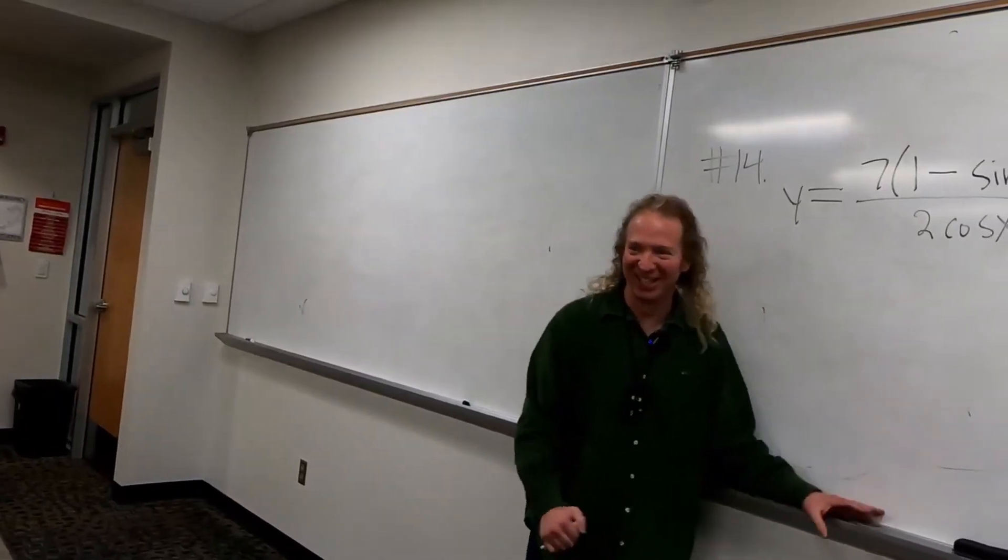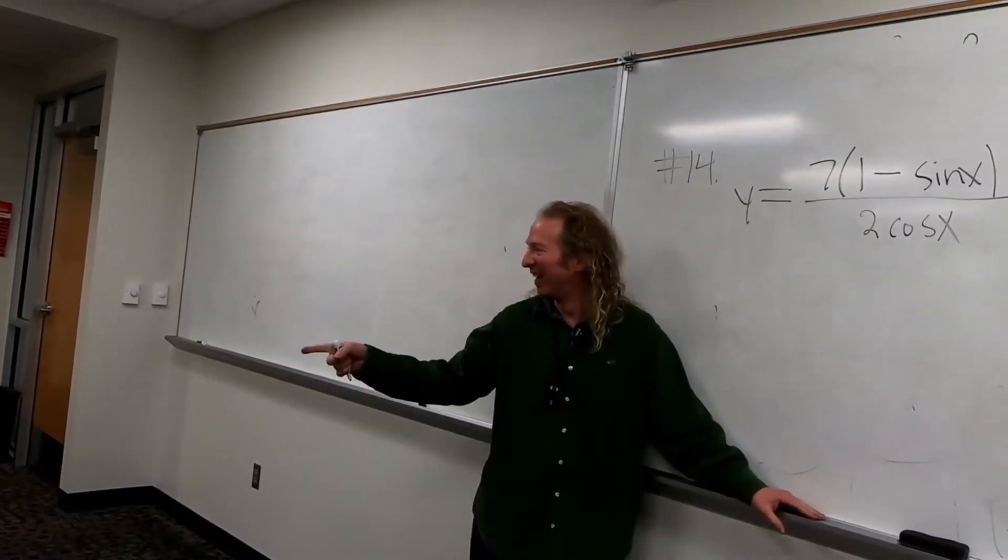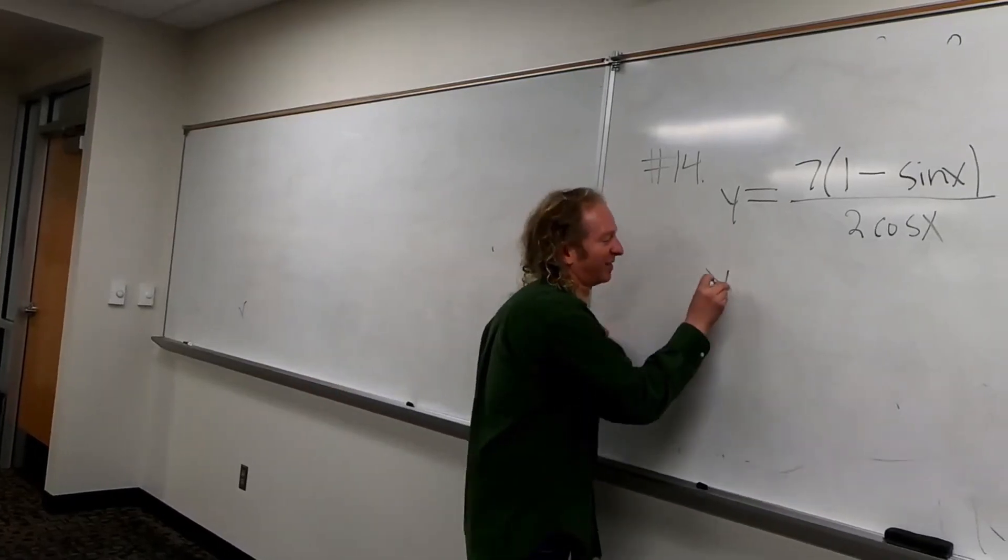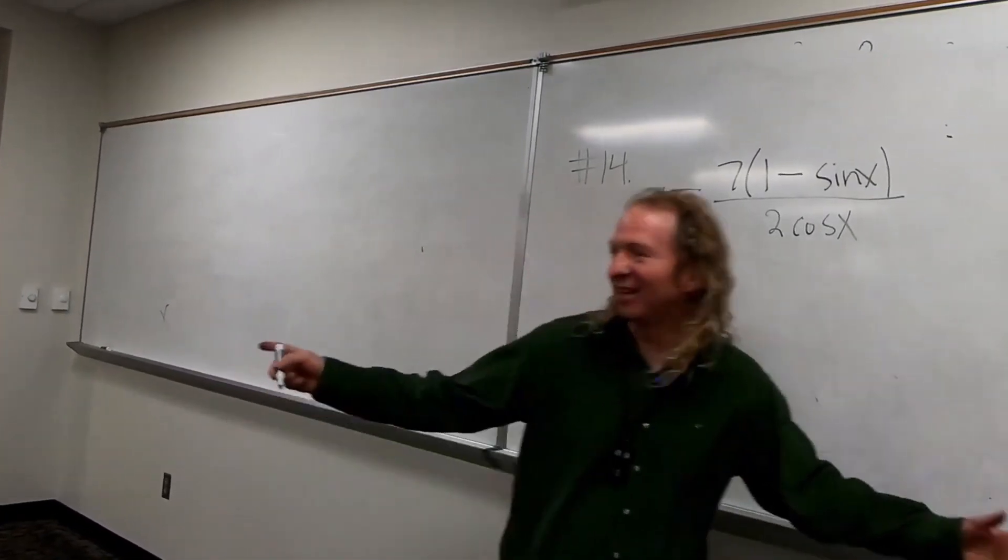If your life depended on it... You distribute the 7. And then split them apart. And then get a tan on one side. That's it.